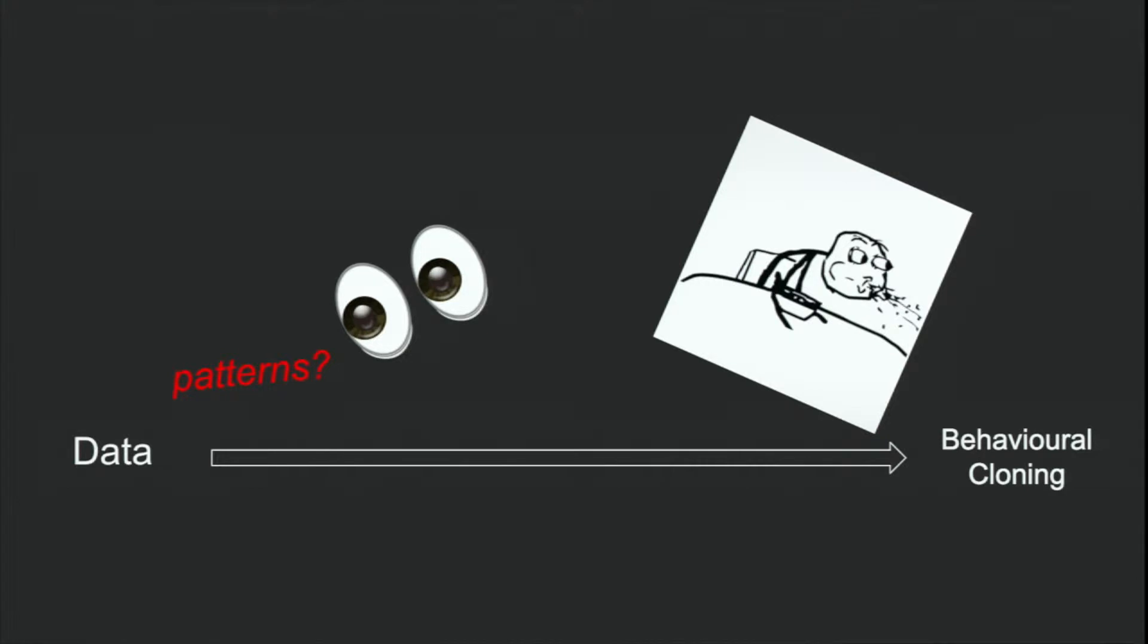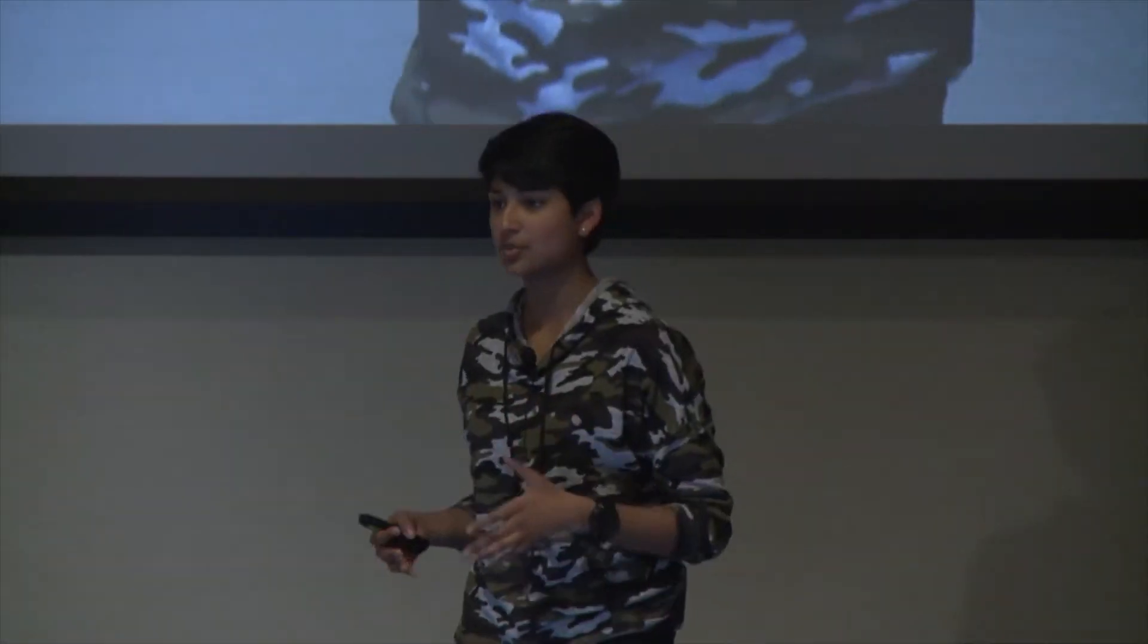When you convert this prediction into an action, that's how you get behavioral cloning. Essentially what that means is an AI can watch a human behavior and then replicate it itself. So when applied to driving, the data that you would input would be a picture of what the car sees on the road, and then it would associate it with a pattern.